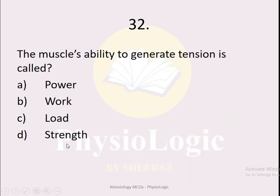MCQ number 32 (renumbered): The muscle's ability to generate tension is called — power, workload, or strength. The correct option is strength. The muscle's ability to generate tension is called muscle strength.